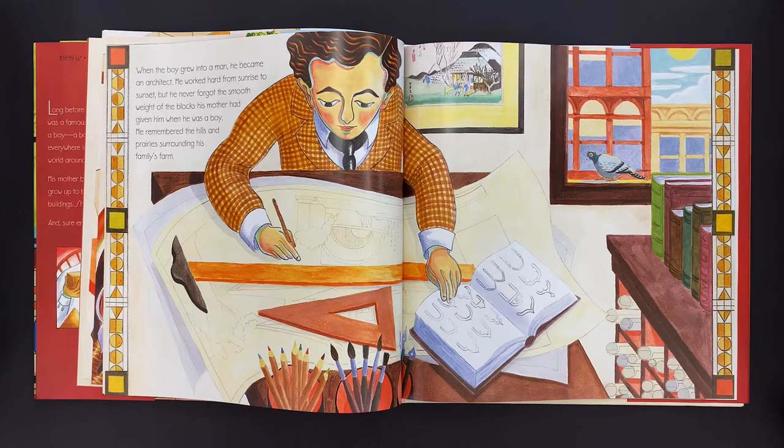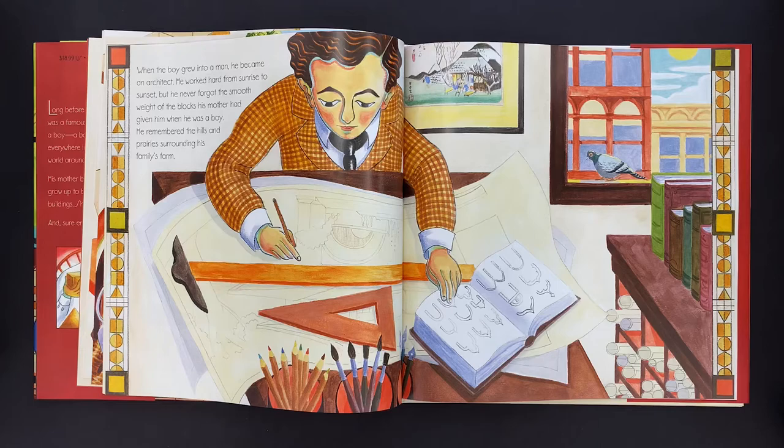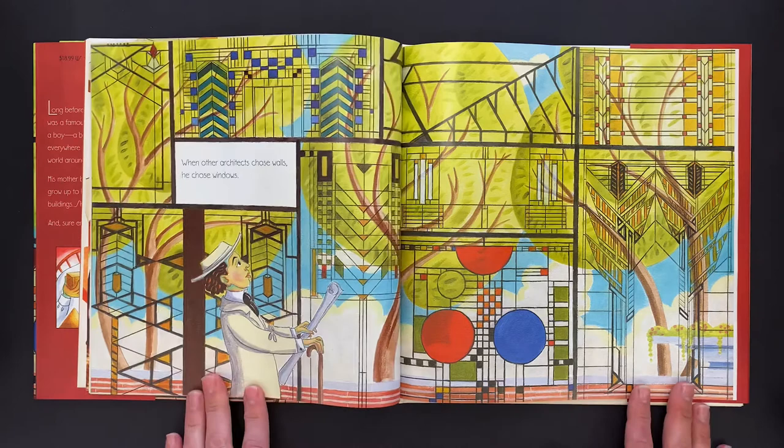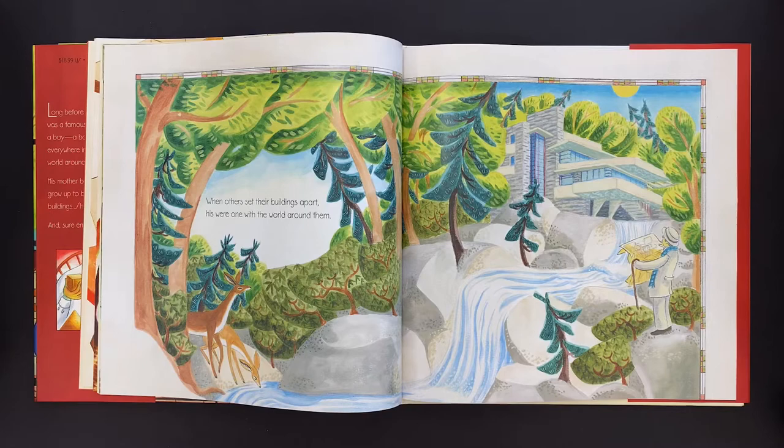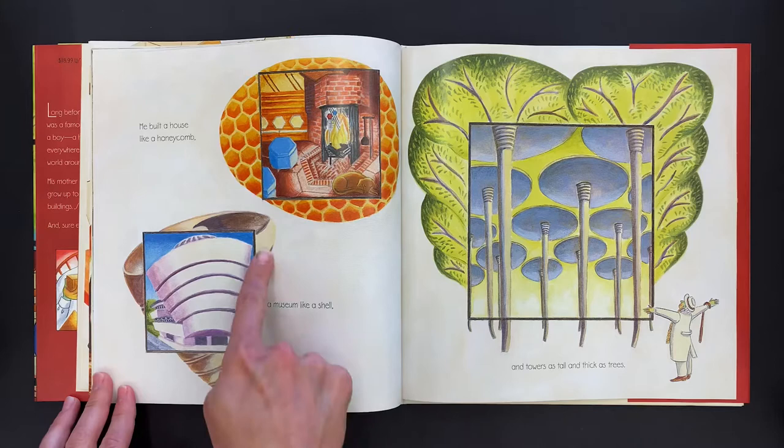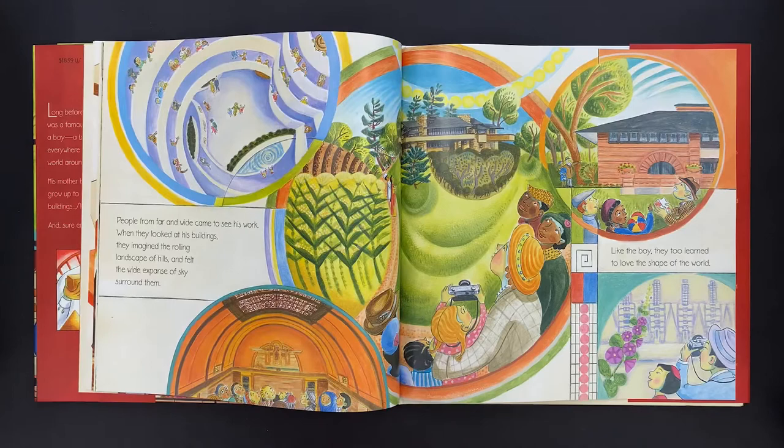When the boy grew into a man, he became an architect. He worked hard from sunrise to sunset, but he never forgot the smooth weight of the blocks that his mother had given him when he was a boy. He remembered the hills and the prairies surrounding his family's farm. And when other architects chose walls, he chose windows. Look at all these beautiful stained glass windows he designed. When others set their buildings apart, his were one with the world around them. He built a house like a honeycomb with hexagons, a museum like a shell, a nautilus shell, and towers as tall and thick as trees.